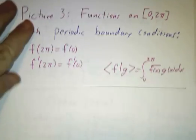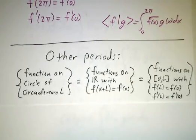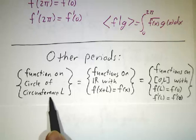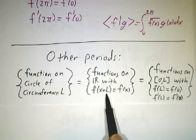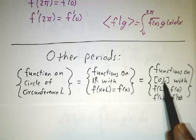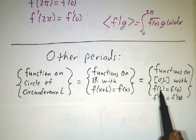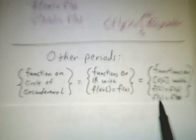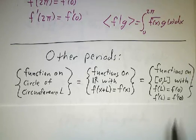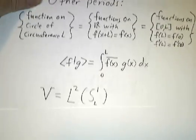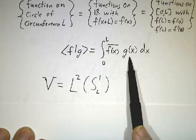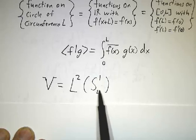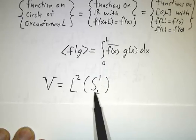That was for period 2π. If you want period L, you can play the same game. You can think about a function on a circle whose circumference is L instead of 2π, or functions on the real line that repeat every L, or functions on the interval from 0 to L with the condition that the value at the endpoint equals the value at the beginning point, and the derivative at the endpoint equals the derivative at the beginning point. We take the inner product by integrating from 0 to L of the conjugate of the first function times the second, and we call this space L2 of S1_L — where S1 means a circle of circumference L.